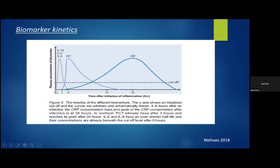Biomarker kinetics are really important. This graph forms the basis of the pros and cons of the various biomarkers we'll discuss. Interleukins like IL-6 rise fairly quickly when there's an inflammatory stimulus — within the first one to two hours, peaking at about two hours, then dropping exponentially when the stimulus ends. PCT starts to rise within three to four hours, peaks at about 12 to 24 hours, and then rapidly decreases when the stimulus ends. CRP takes about three to four hours to start rising, reaches a peak at about 36 hours, and then takes 24 to 48 hours to come back down.